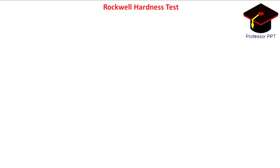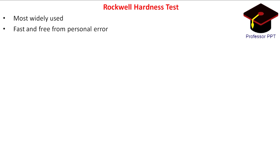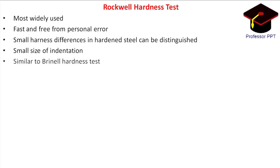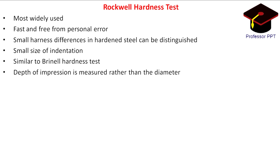The Rockwell hardness test is the most widely used hardness test. Its widespread use is due to its speed, freedom from personal error, ability to distinguish small hardness differences in hardened steel, and the small size of indentation so that finished heat-treated parts can be tested without damage. It is very similar to the Brinell test, but in this case the machine measures the depth of impression rather than the diameter.